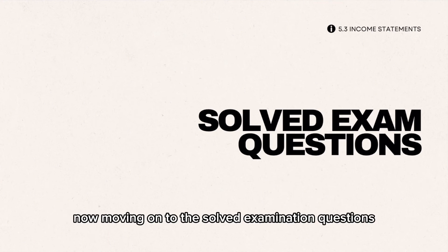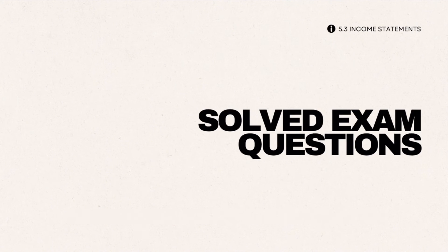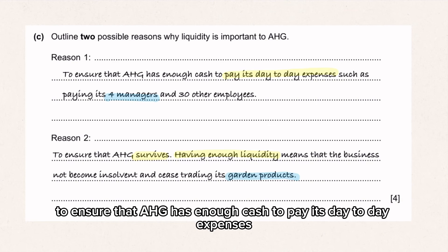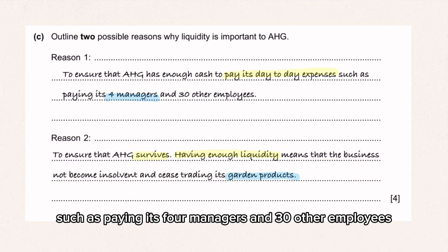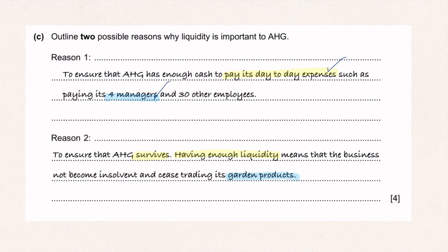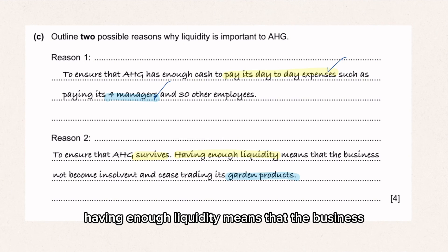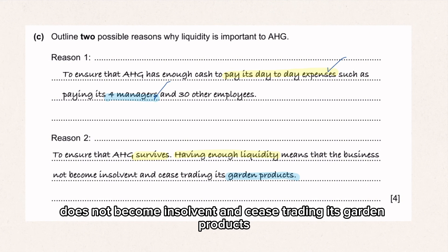Moving on to solved examination questions. Outline two possible reasons why liquidity is important for AHG. Reason one: to ensure that AHG has enough cash to pay its day-to-day expenses such as paying its four managers and thirty other employees. Reason two: to ensure that AHG survives — having enough liquidity means the business does not become insolvent and cease trading its garden products.